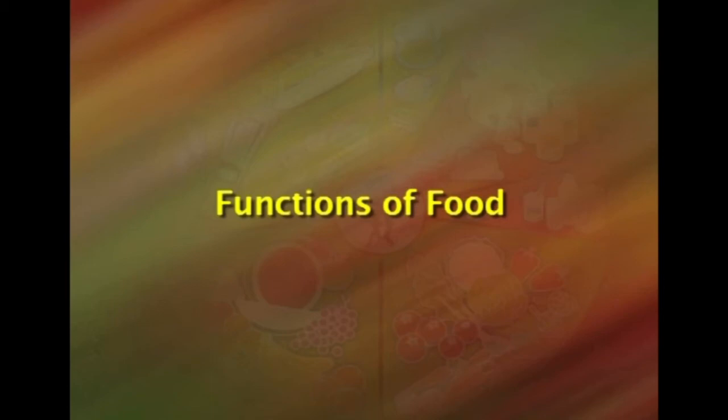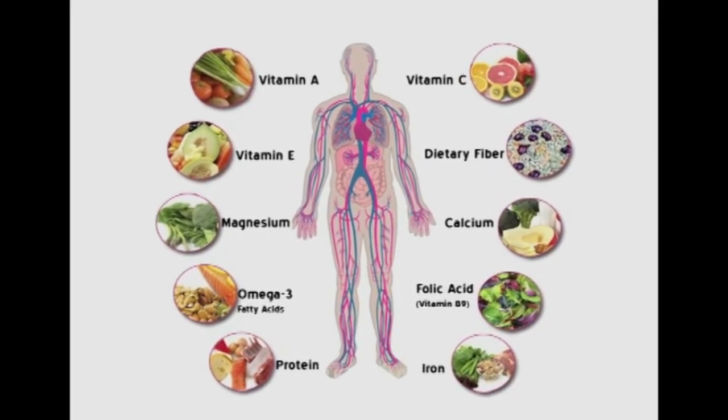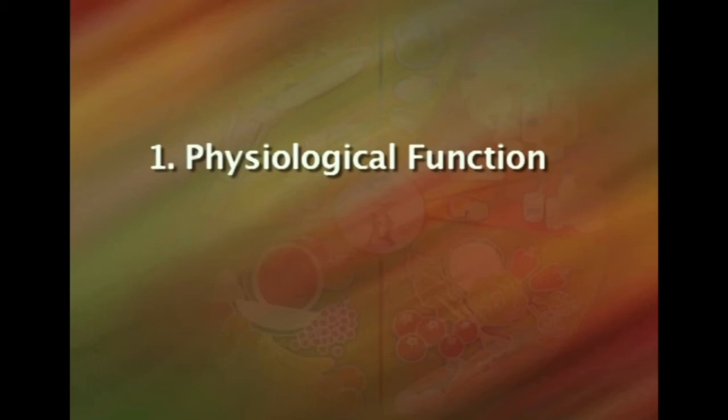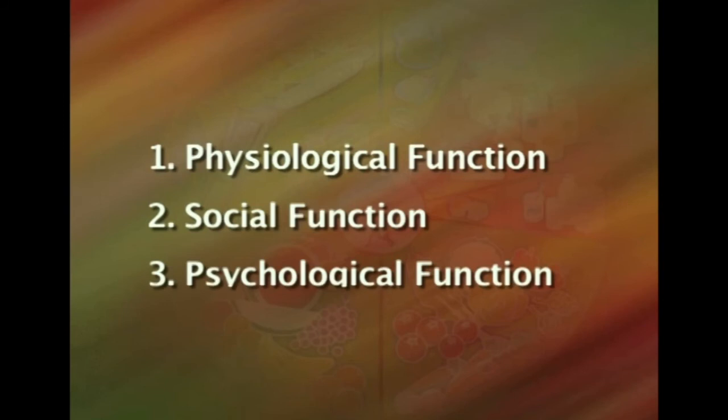That was the classification of foods into four different categories. Now we are going to understand the functions of food. Food nourishes our body and we all require food for the sustenance of life. Anything eaten or drunk which meets the needs for energy, bodybuilding, regulation, and protection of the body is defined as food. There are three basic functions of food: the first is physiological function, the second is social function, and the third is psychological function.